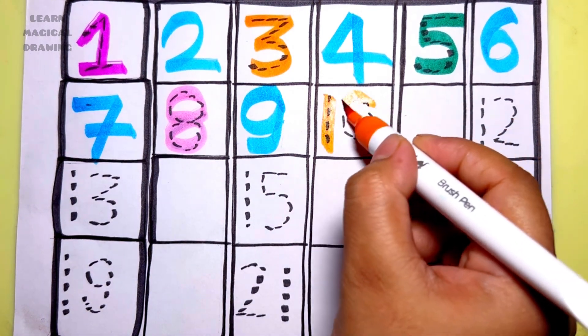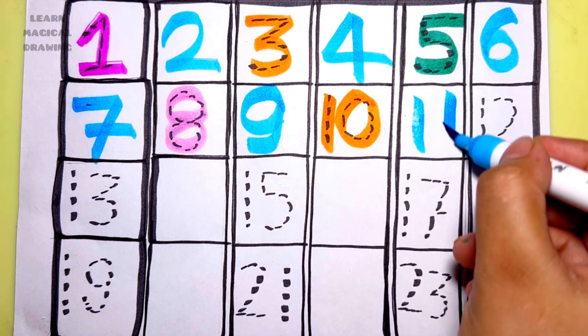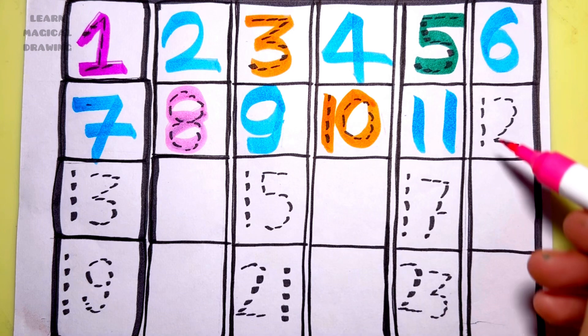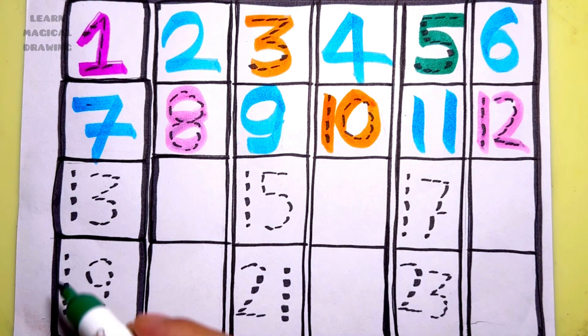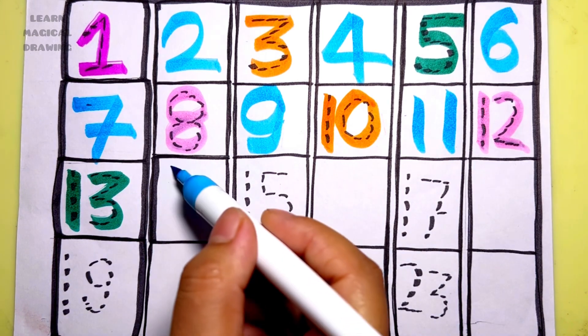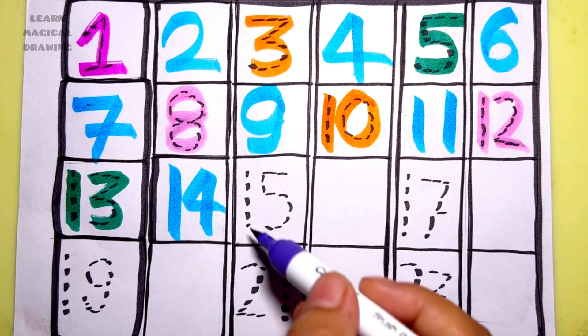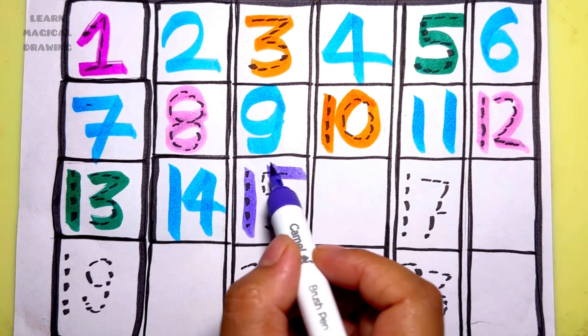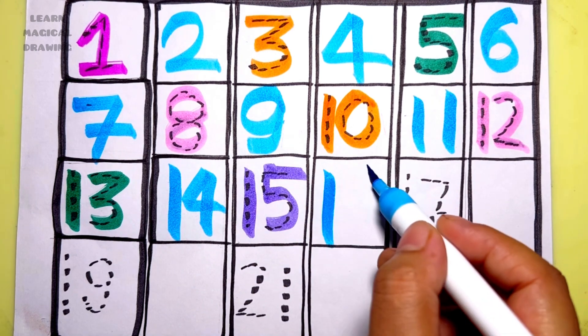One zero - ten, one one - eleven, one two - twelve, one three - thirteen, one four - fourteen, one five - fifteen, one six - sixteen.